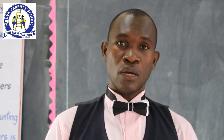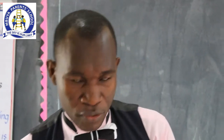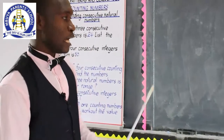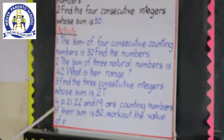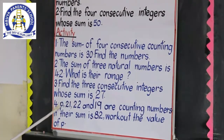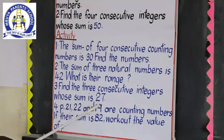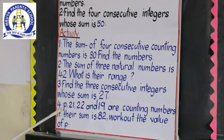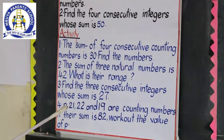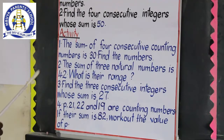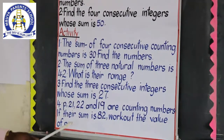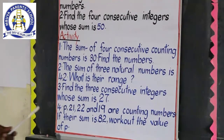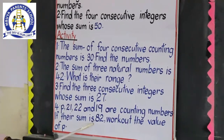I would like us to have a review by looking at one question among the four numbers that were left. I am going to take you through number four of our previous activity. It reads: P, 21, 22, and 19 are counting numbers. If their sum is 82, work out the value of P. In this question there are three key words: counting numbers, sum, and value. We are going to look at the value of P — which numbers, when added, give us 82?